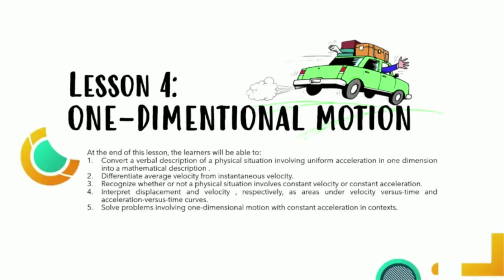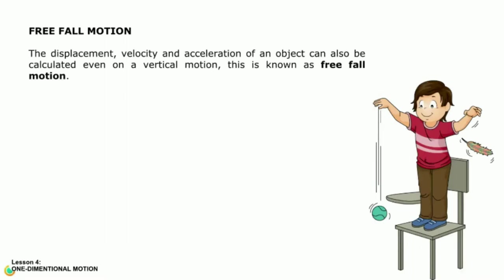Hello dear students, today we will be talking about part two of our lesson about one dimensional motion: free fall motion. The displacement, velocity, and acceleration of an object can also be calculated even on a vertical motion. This is known as free fall motion.